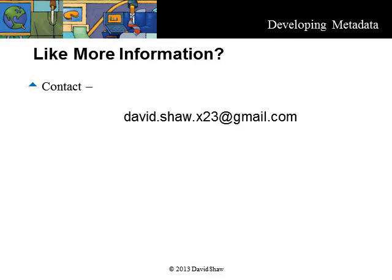This is the end of the introduction to taxonomy and metadata. There is a lot to consider in developing a comprehensive metadata model that is automated as much as possible. Hopefully, by starting with the basics of a taxonomy as we did in Parts 1, 2, and 3, you are able to follow this module on metadata. Using the framework approach should be very helpful in your project. If you have any feedback or questions, please send me an email.